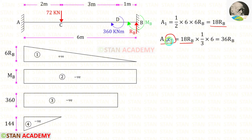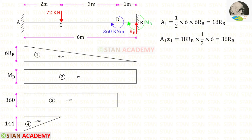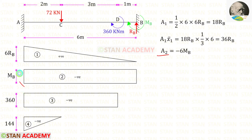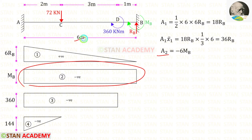Let us find x̄₁ for Area 1. For this triangle, the centroid distance from the left is one-third times the breadth. Here the breadth is 6, so one-third into 6. For Area 1 times x̄₁ we will get 36RB. Now let us find Area 2. This is a rectangle; when we multiply 6 with MB we get the area. We know that it is negative.